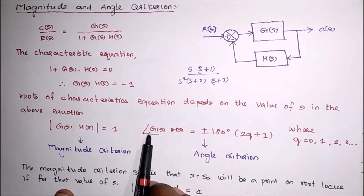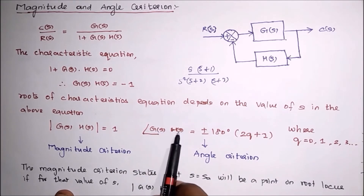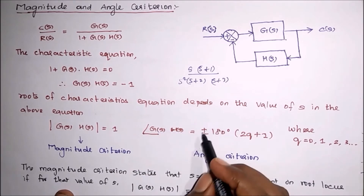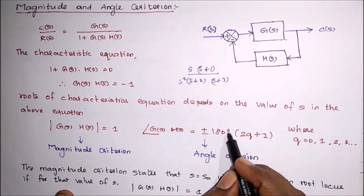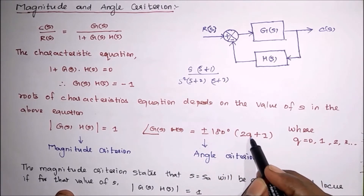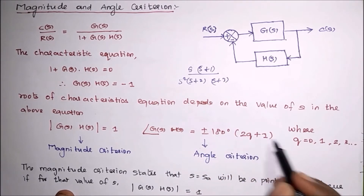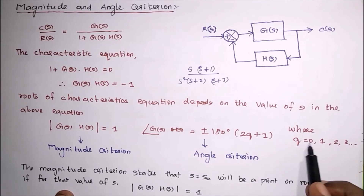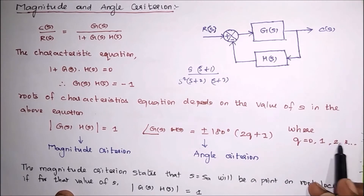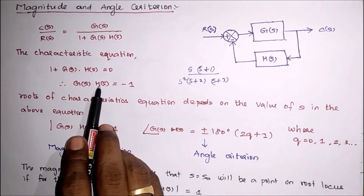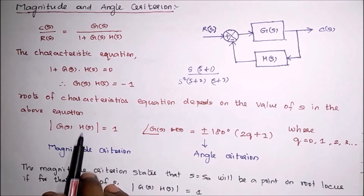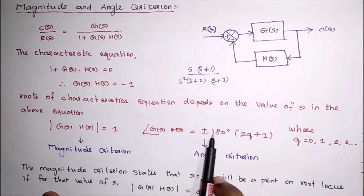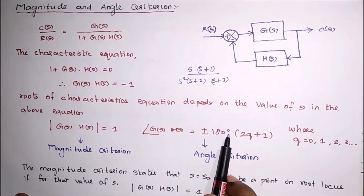The corresponding angle criterion states that: angle of G(S) into H(S) equals plus or minus 180 degrees into (2Q + 1), where Q equals 0, 1, 2, 3. From this characteristic equation, the magnitude criterion and angle criterion are established.